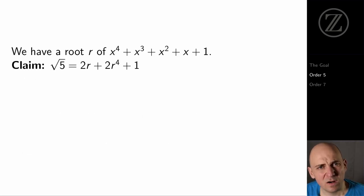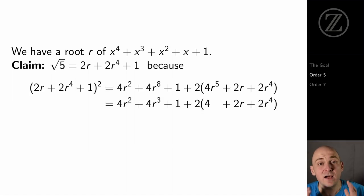So we have r, a root of that polynomial. And I claim that 2r plus 2r to the 4th plus 1 is a square root of 5 in U_p. So I'm claiming that if I take that quantity and square it, I'm going to get 5. So I'll take that quantity and I'll square it. And I'll expand it out. And I'll get 4r squared plus 4r to the 8th plus 1 plus 2 times the cross terms, 4r to the 5th plus 2r plus 2r to the 4th.